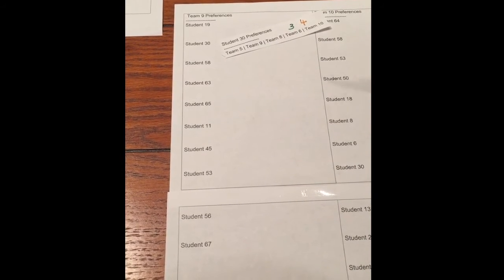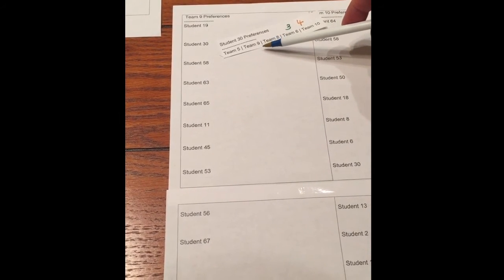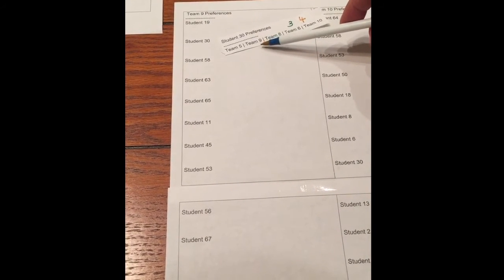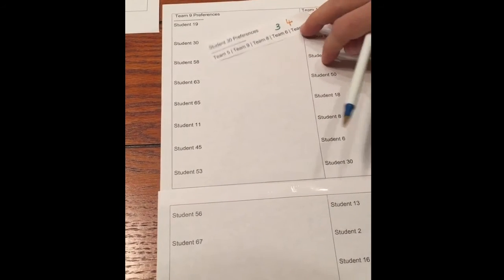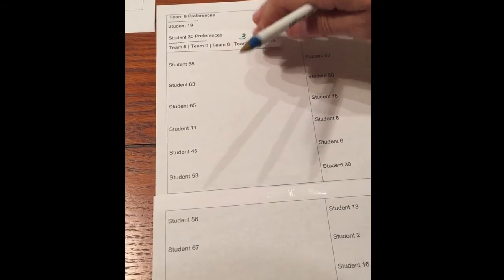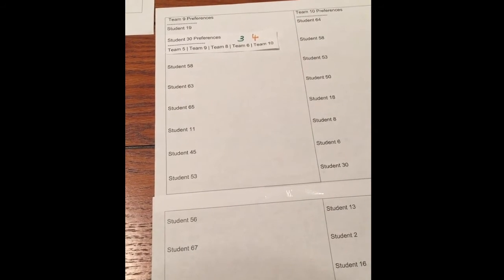Now we're going to try Student 30 on their second ranked team. In this case, Team 9. And we can see that Team 9 ranks Student 30 second. So we can place Student 30 on Team 9 in the corresponding position.